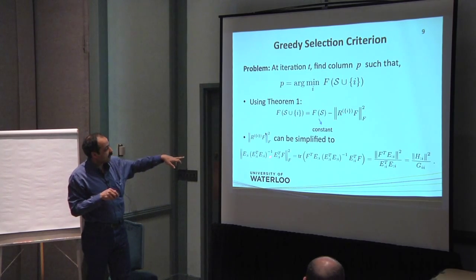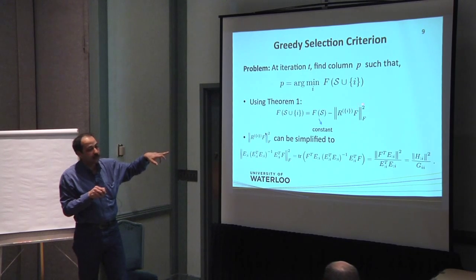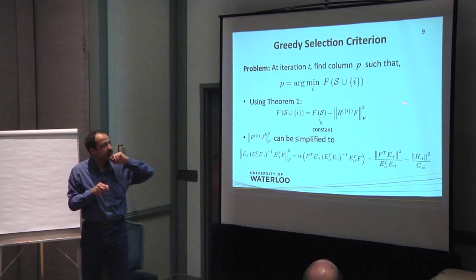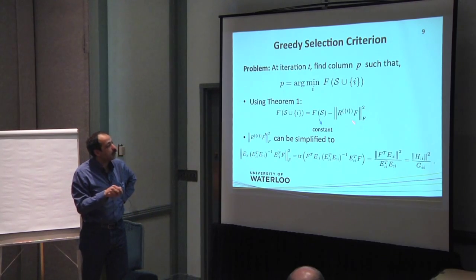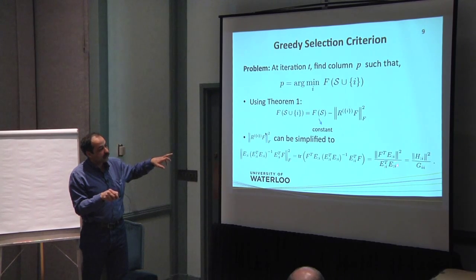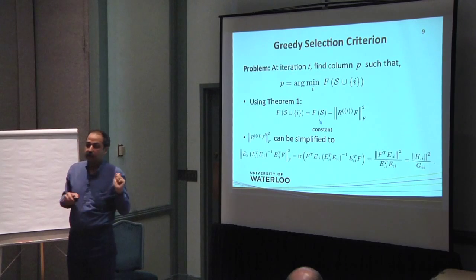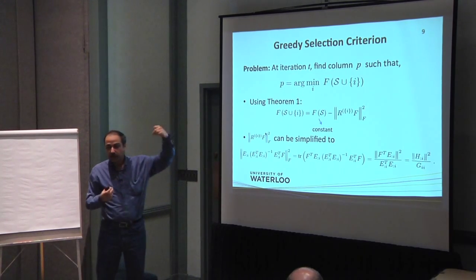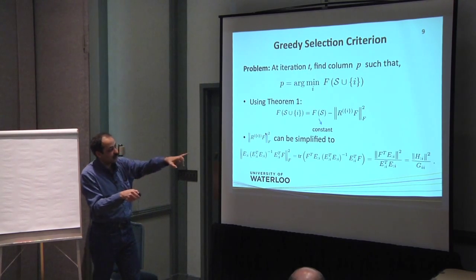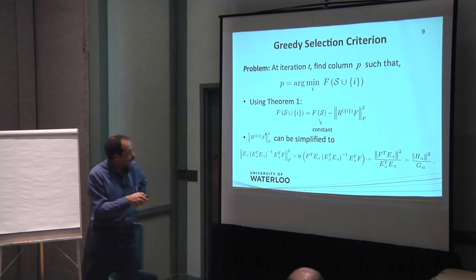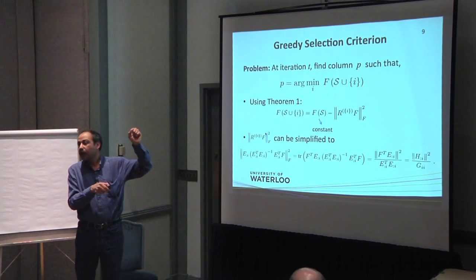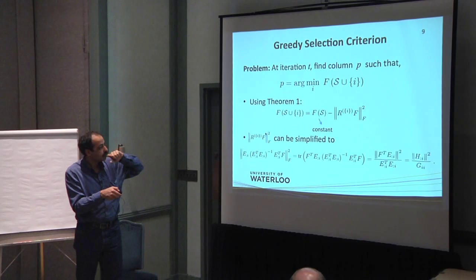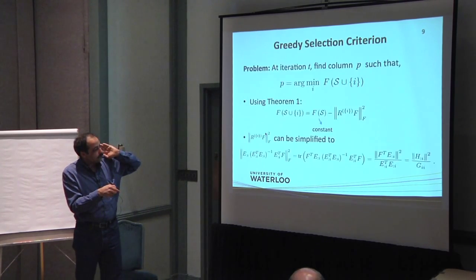And which is, as I said, R is basically a projection matrix built on the residual of A and F is residual of B. And by some linear algebra, it can be shown that this cost function can be simplified to this form, where G is just the norm of column I that you want to add, and H is the norm of one of the columns of matrix F residual of B times residual of A. So you have a simple criterion that basically computes the amount that your cost function will be improved by adding a column I.